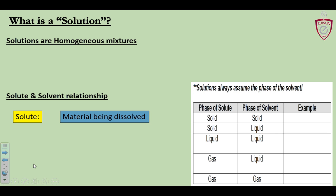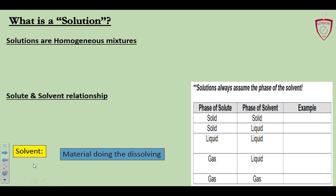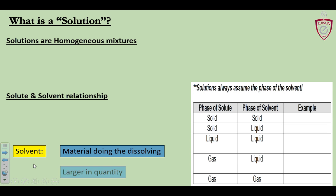There's a relationship. Every solution has solute, which is the material being dissolved, the stuff that gets dissolved. It's smaller in quantity by definition. So a pinch of salt into a pot of boiling water, the salt is the solute because it's just a little bit of it. And the solvent is the material doing the dissolving. So in that same scenario, in larger quantity, the water would be the solvent dissolving the salt. And I got to be honest, in this chemistry course we're talking about solutions dealing with water. So we're pretty much always talking about water is the solvent.